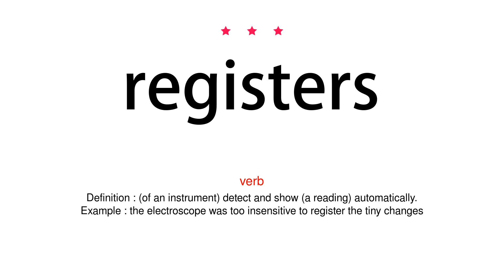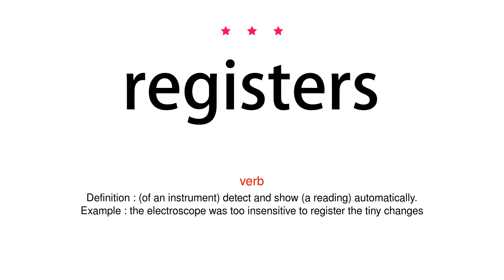Verb. Definition: Of an instrument — detect and show a reading automatically. Example: The electroscope was too insensitive to register the tiny changes.